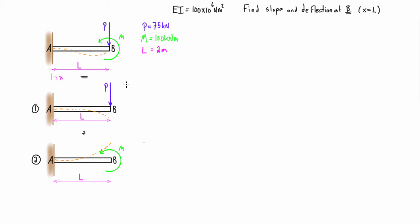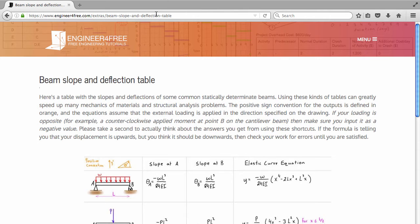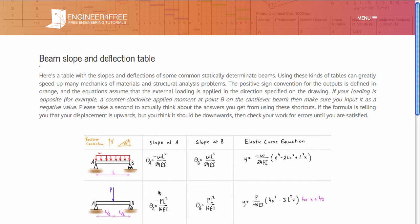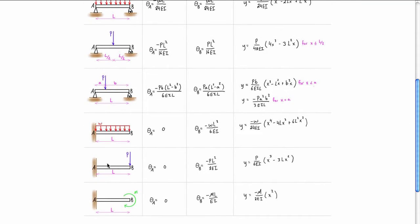What we want to do is go to our table for beam slopes and deflections. There's one here on the website—you can find the URL here, otherwise the link will be in the description. We want to come down to the cantilever beam section. We have a point load acting at the end and a moment acting at the end.